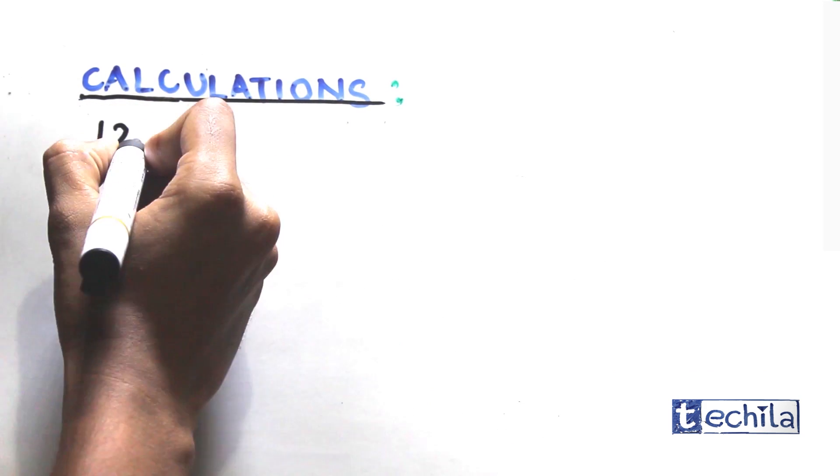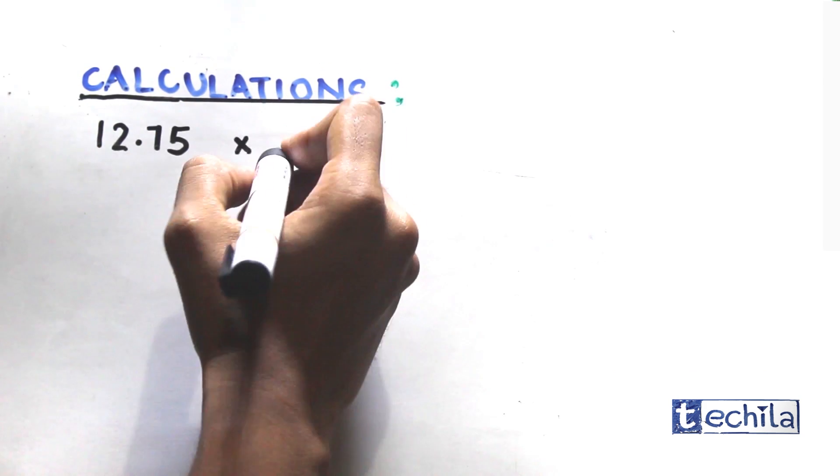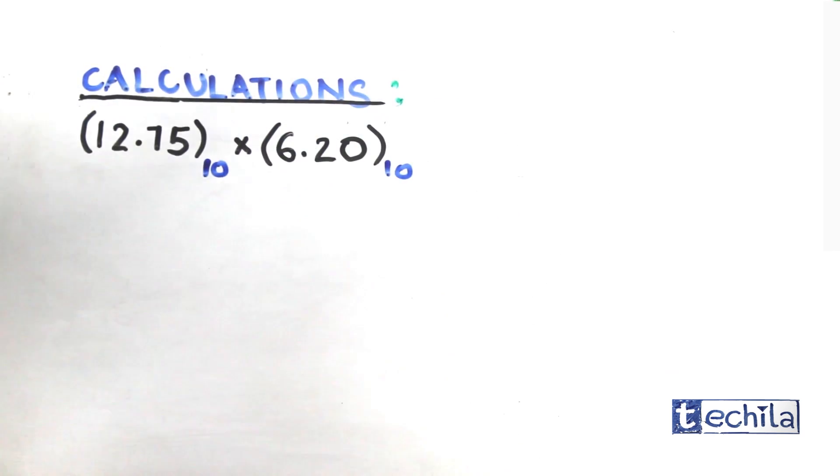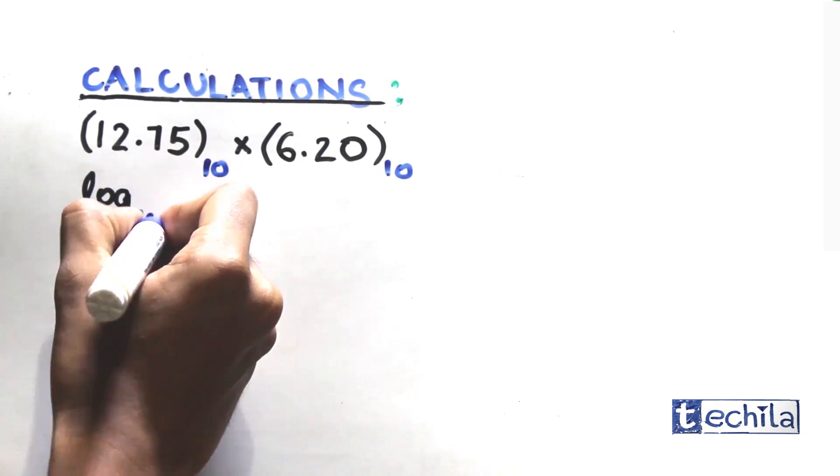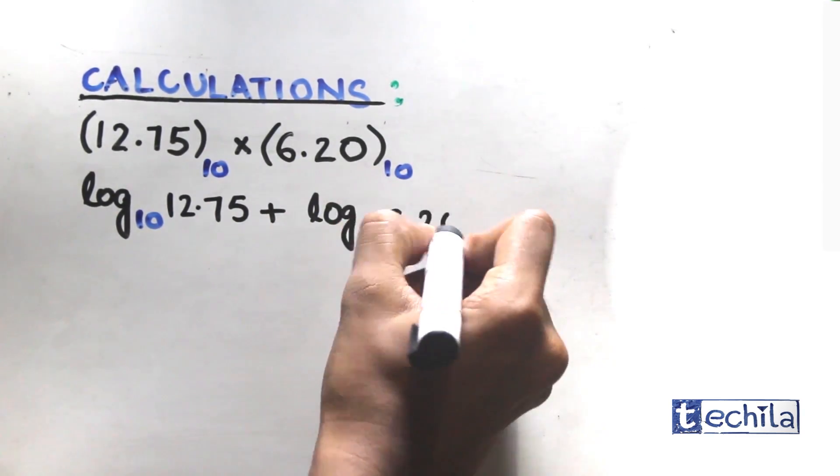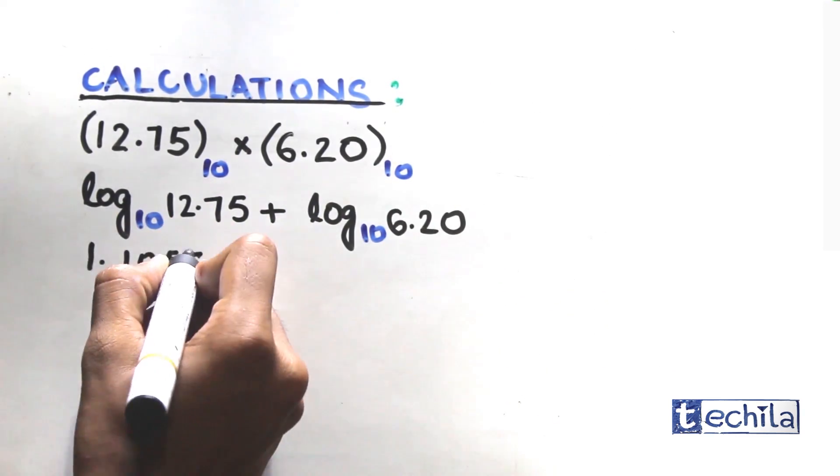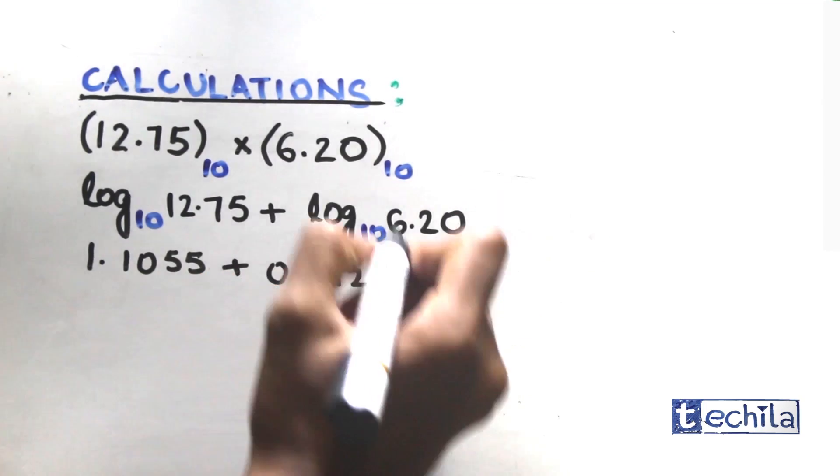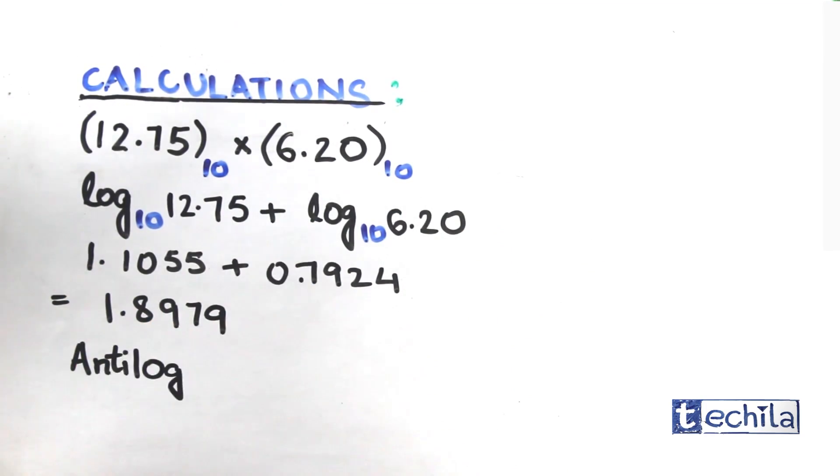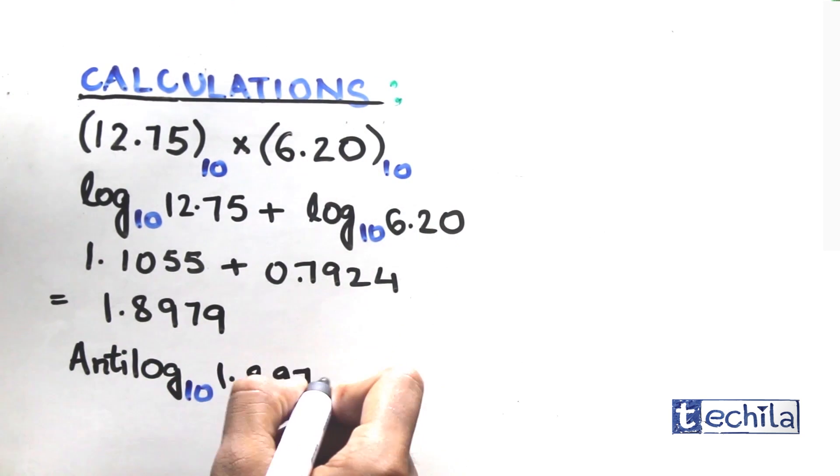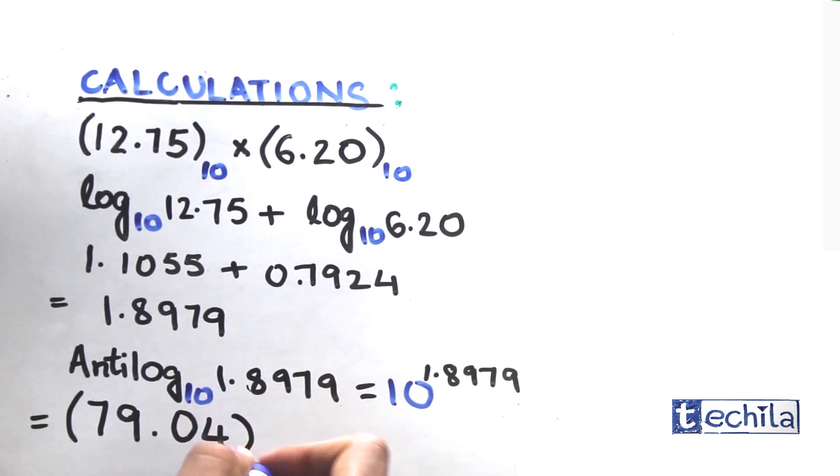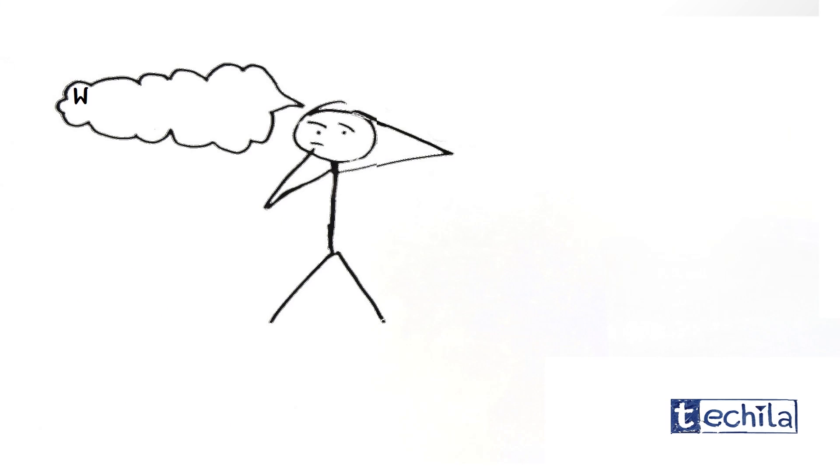Taking log with the base 10, we get log with the base 10 of 12.75 plus log with the base 10 of 6.2, which equals to 1.8979. Taking anti-log, that is 10 raised to 1.8979, which equals 79.04.